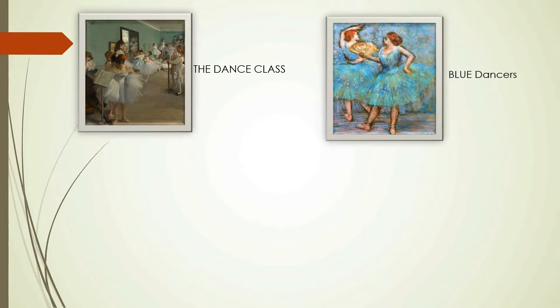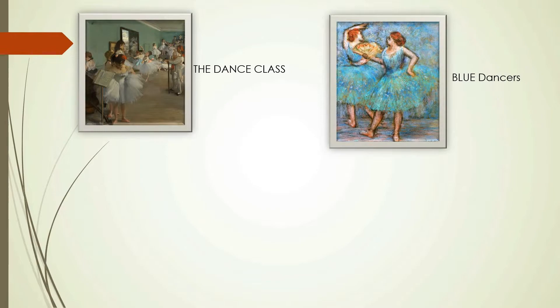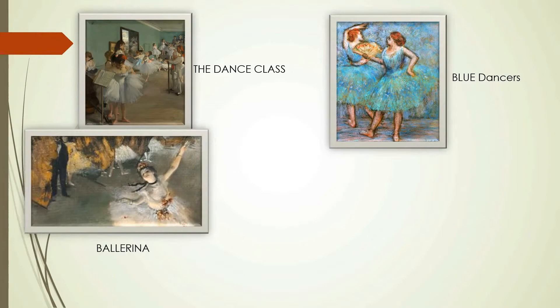The first painting I will explain is 'The Dance Class.' The Dance Class is an 1874 painting by Edgar Degas, in the collection of the Metropolitan Museum of Art. The painting and its companion works in the Musée d'Orsay, Paris, are among the most ambitious works by Degas on the theme of ballet.